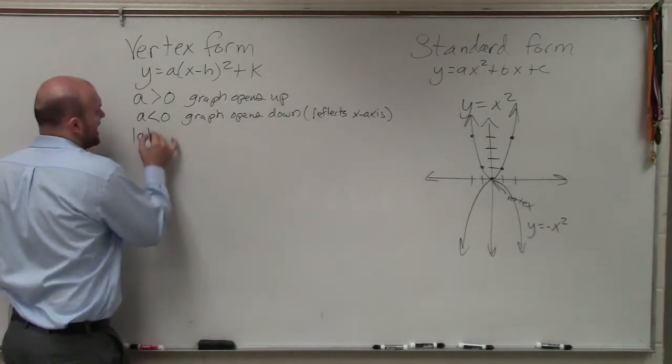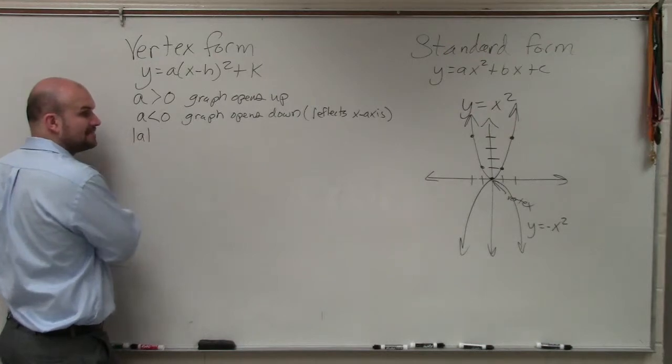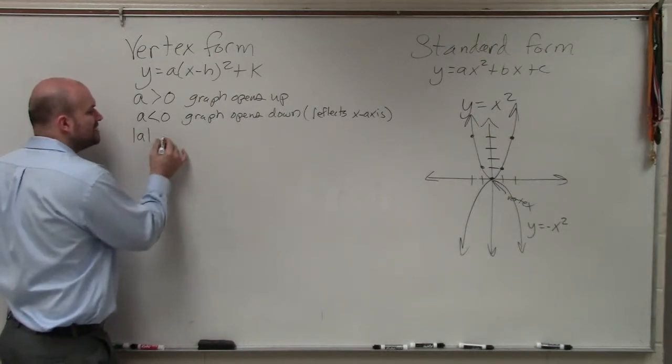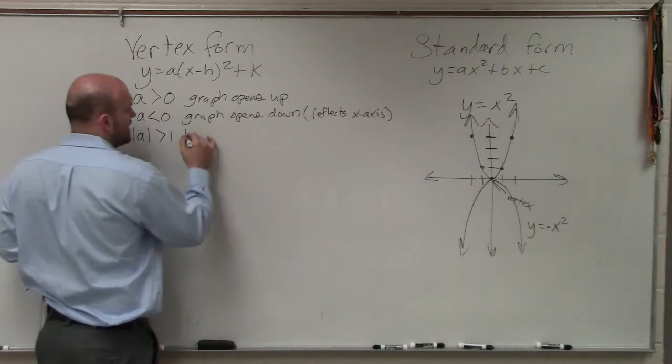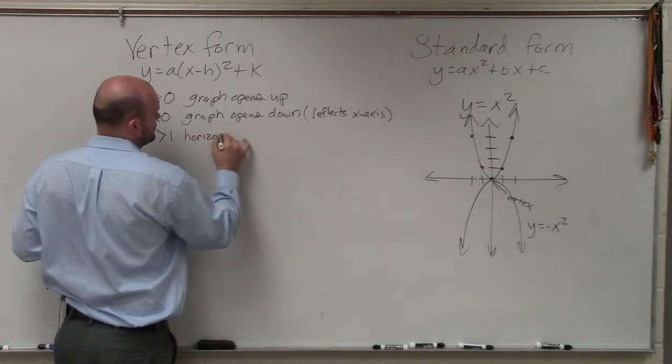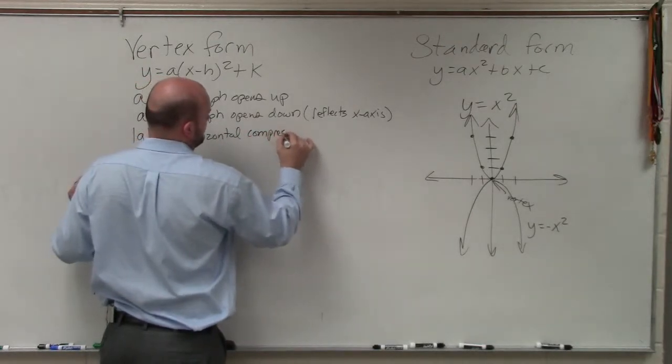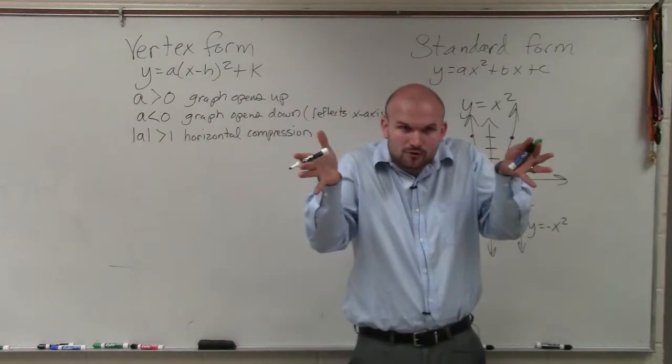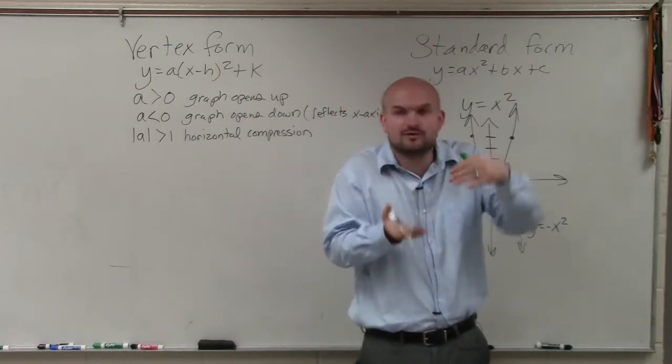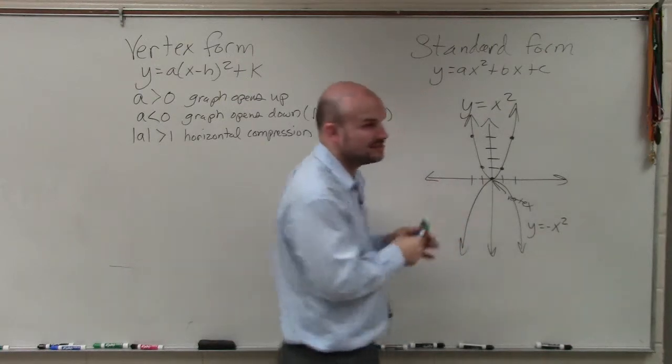Now, let's look at the absolute value of A. So regardless of positive or negative, let's look at the absolute value of A. If the absolute value of A is greater than the number 1, then we have a horizontal compression. And what that means is the graph is now going to be compressed horizontally. Or you could also think of it vertically stretched. But it's going to be horizontally compressed. So let's look at an example.